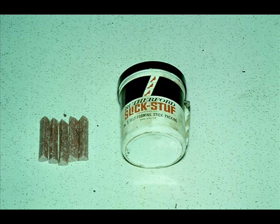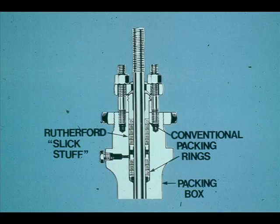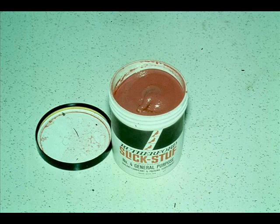Lubricants and packing other than those of a specific valve manufacturer can be used. Rutherford Slick Stuff is currently being used at Baytown and Baton Rouge plants. This packing is a Teflon base, self-forming material that can withstand 600 degrees Fahrenheit temperature. A conventional Teflon graphite packing ring is used for the first and last rounds of packing when you pack a control valve with Slick Stuff. Rutherford Slick Stuff requires no lubrication, but Rutherford No. 4 Lubricant is an excellent packing lubricant and will prolong the life of any packing.